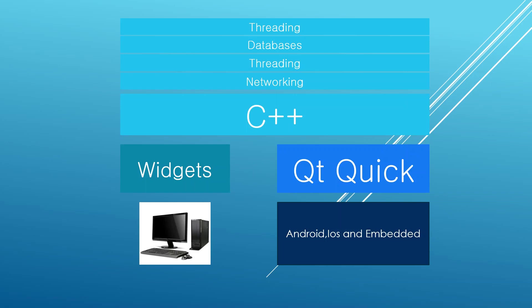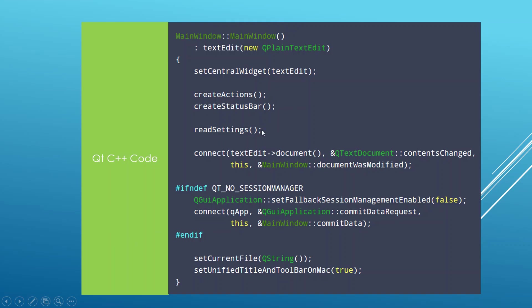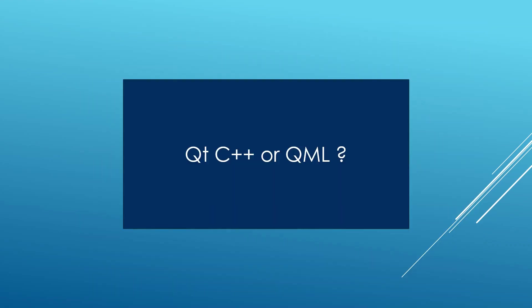If you are building a real application, you will mostly need to interface to C++ to take full advantage of what Qt has to offer. Qt Quick is a declarative language — you put little components together and can prototype very quickly. And Qt C++ code lets you use components to build fast graphical user interfaces.